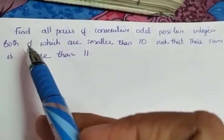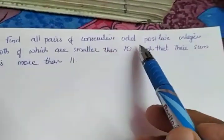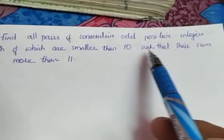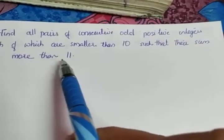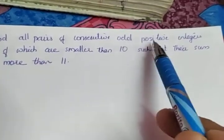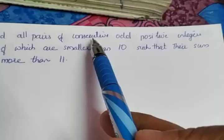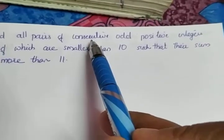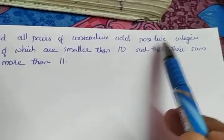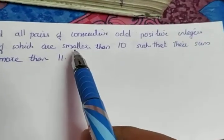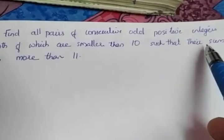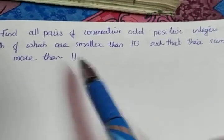The third question: Find all pairs of consecutive odd positive integers both of which are smaller than 10 such that their sum is more than 11. We have to find pairs of consecutive odd positive integers — there are many conditions. It is consecutive pair odd positive integers, both numbers are smaller than 10, and the last condition is their sum is more than 11.